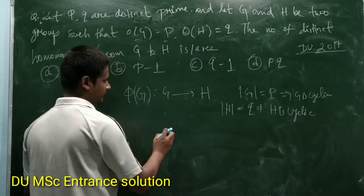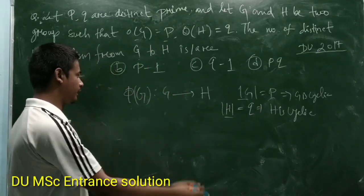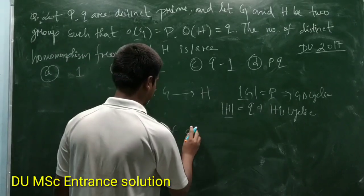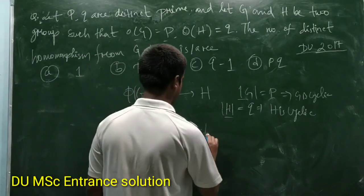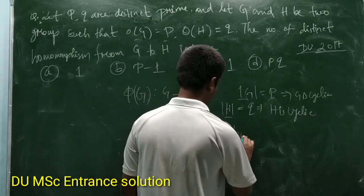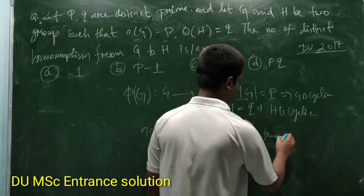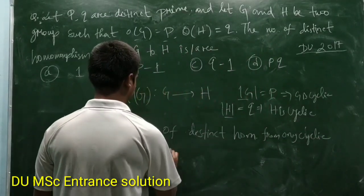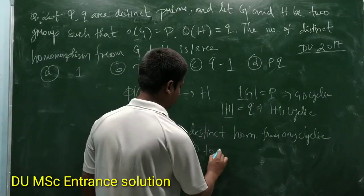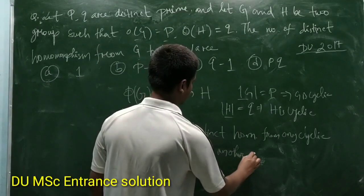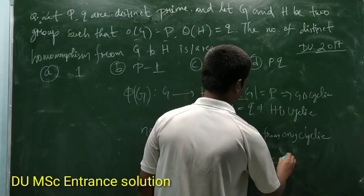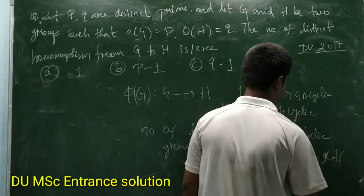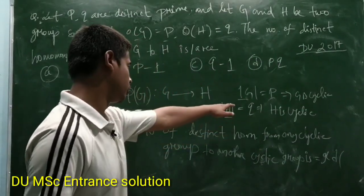Now we know if two groups are cyclic, then the number of distinct homomorphisms from one cyclic group to another cyclic group is GCD of the order of that group. The orders are given as both are prime and both